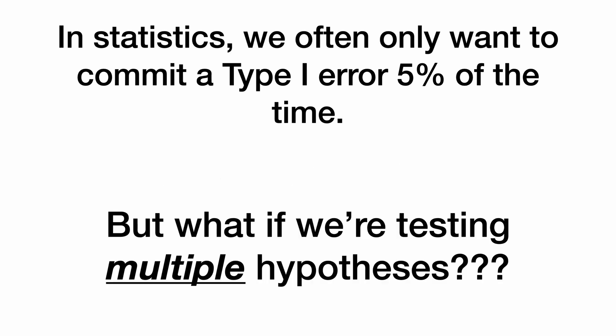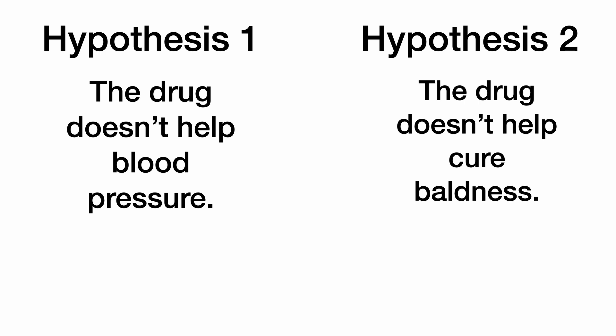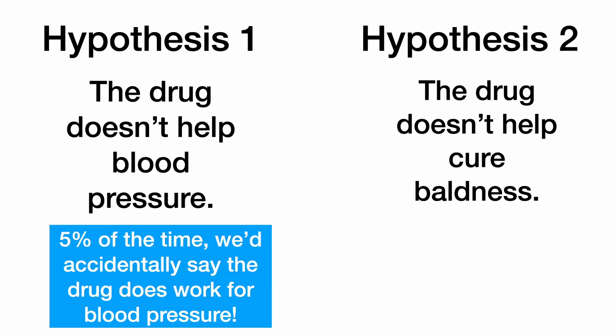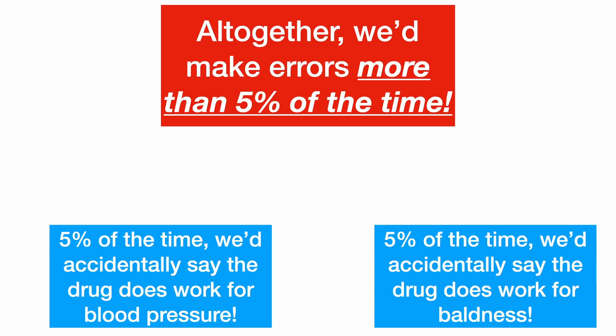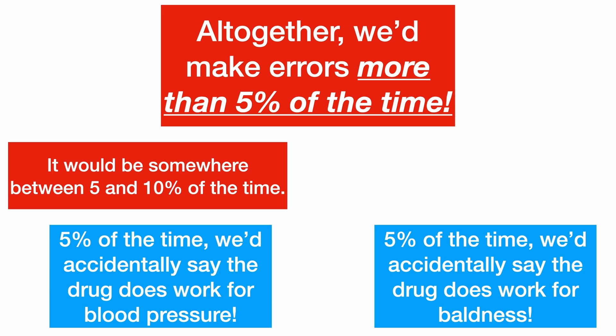But what if we're testing multiple hypotheses? For example, one hypothesis might be that the drug doesn't help with blood pressure, and another hypothesis might be that the drug doesn't help cure baldness. If our alpha is 0.05, then 5% of the time we'd accidentally say the drug does work for blood pressure, and 5% of the time we'd accidentally say the drug does work for baldness. But altogether, we'd make errors more than 5% of the time — somewhere between 5% and 10%, because there might be some overlap.